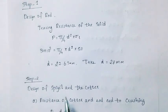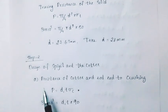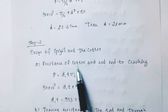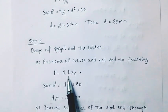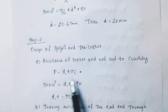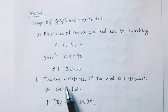Step 2 is the design of the cotter. This section covers the resistance of cotter and rod end to crushing. P equals D1 times T. We will substitute these values.